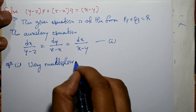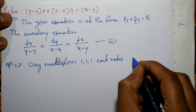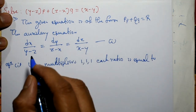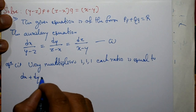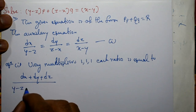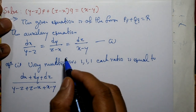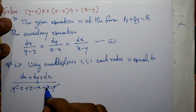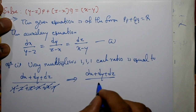Taking multipliers 1, 1, 1 on equation number 1. Each ratio is equal — multiply by 1, 1, 1 and add. The numerator gives dx plus dy plus dz. The denominator gives (y minus z) plus (z minus x) plus (x minus y), which simplifies: plus xy minus xy, minus xz plus xz, plus yz minus yz — the denominator becomes 0.